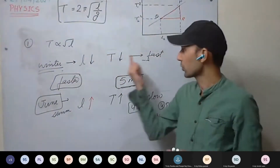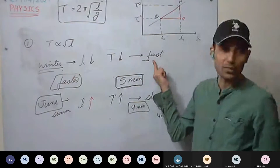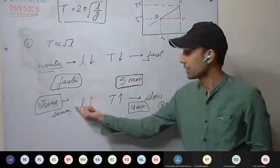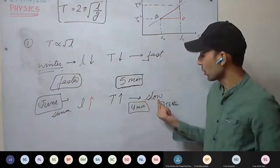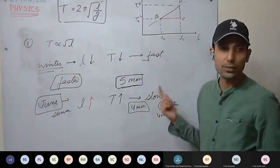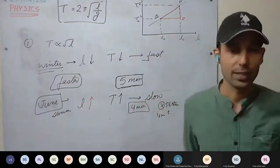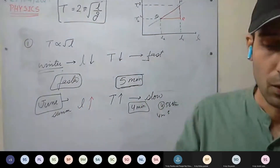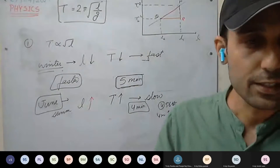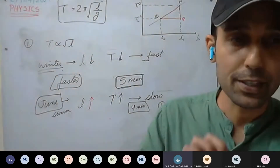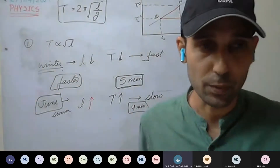So in winter the clock goes faster, and in summer the clock goes slow.